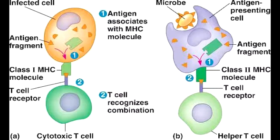Describe how MHC2 initiates an immune response. Since MHC2 mediates immunity to bacterial infection, first the antigen-presenting cells will recognize the microbe, leading to antigen fragments within the antigen-presenting cells combining with MHC2. This forms the MHC2-antigen complex.